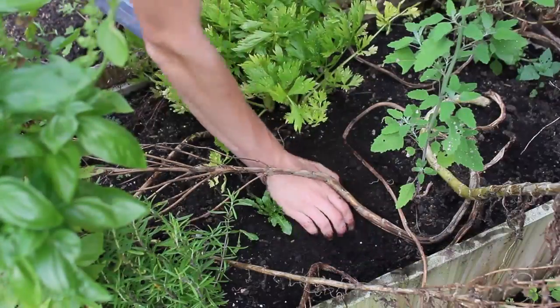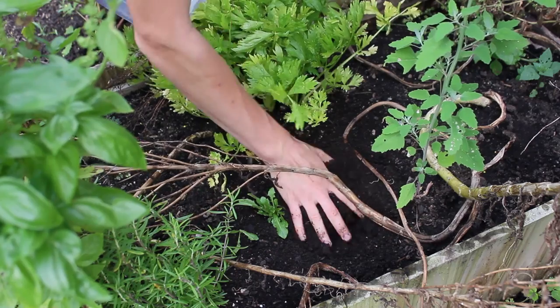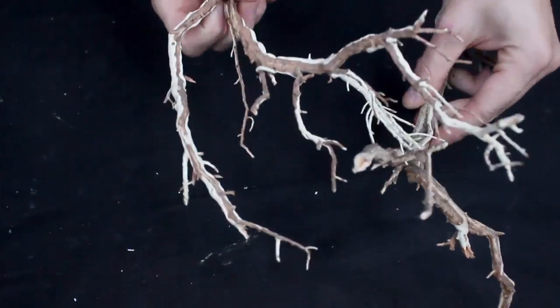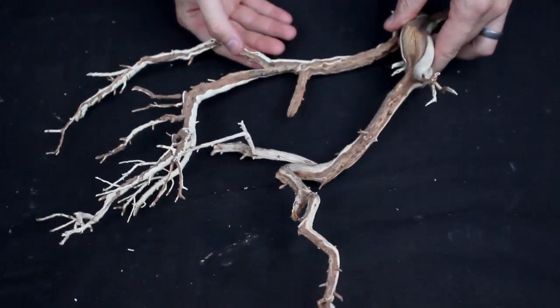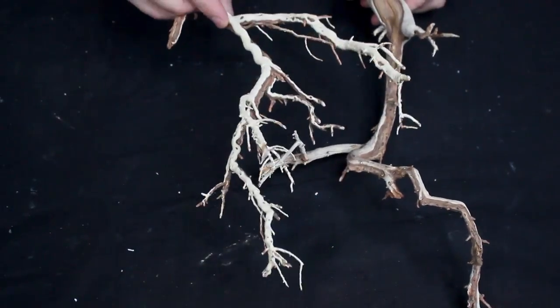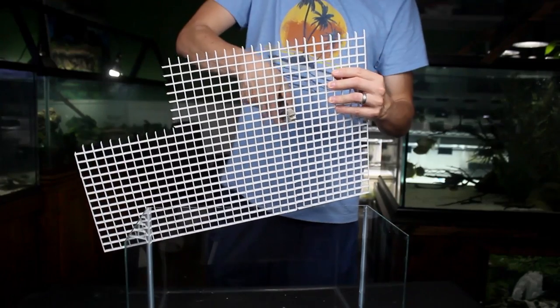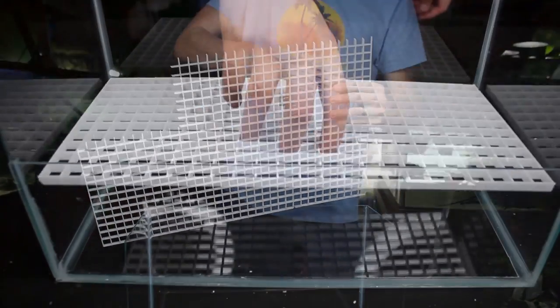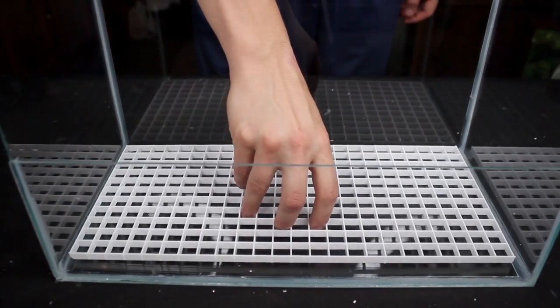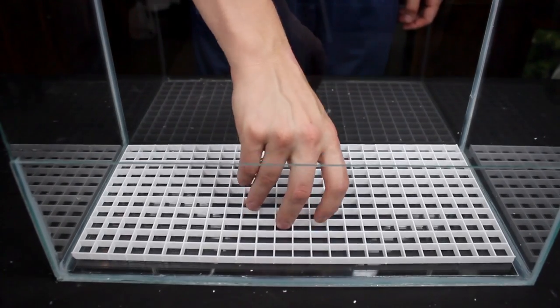While outside I grabbed a few handfuls of dirt from a planter bed in my garden. I'll also be using a few pieces of manzanita wood to scape with. Before setting up the tank with these materials I cut out a piece of egg crate light diffuser with wire cutters. As I've explained before this will help evenly distribute the weight of the stones along the bottom of the tank.